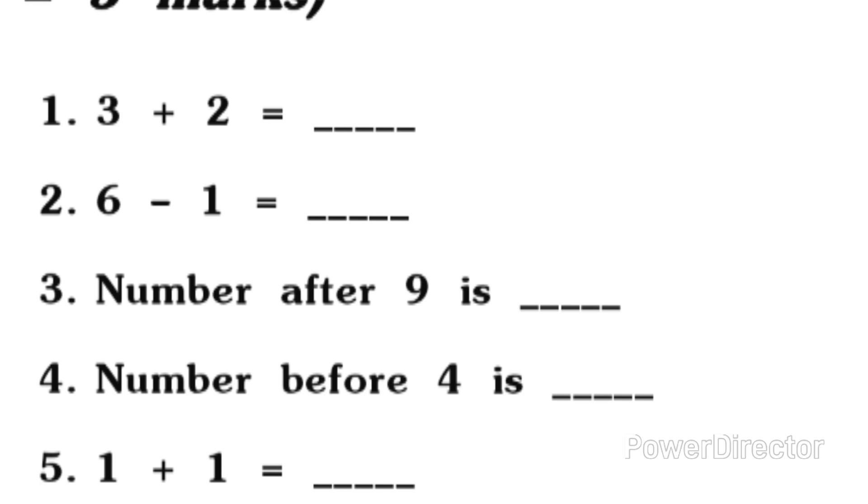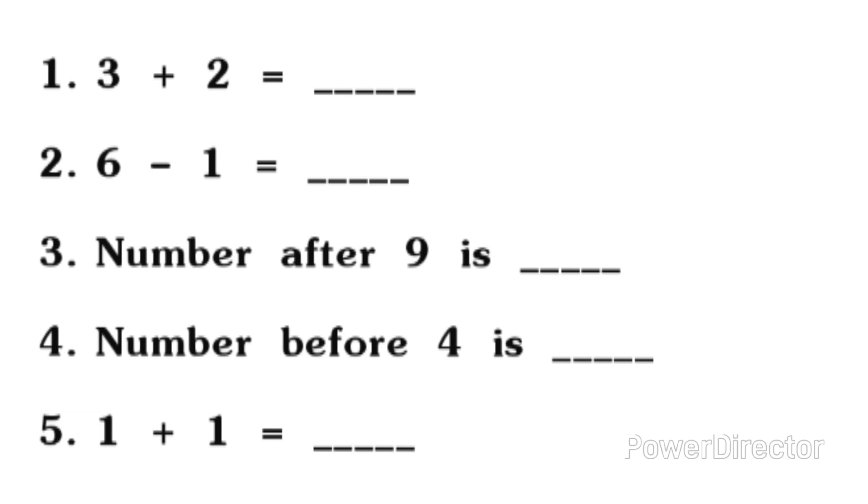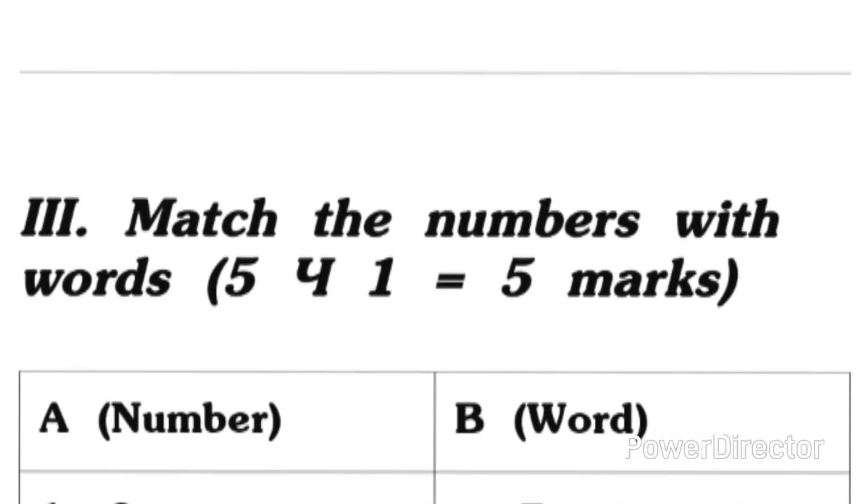Three plus two equals dash, six minus one equals dash, number after nine is dash, number before four is dash, one plus one equals dash. Next, match the numbers with the words.